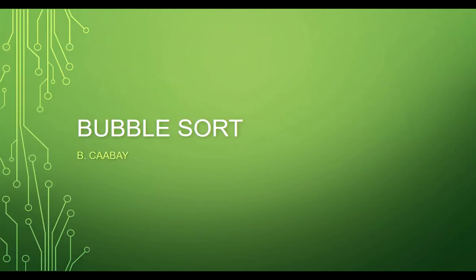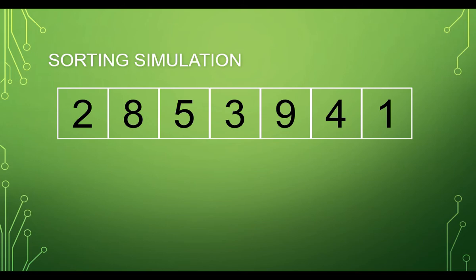To start working with our bubble sort, let's consider the following elements in a collection list. Let's apply the bubble sort algorithm to arrange these elements from the lowest number to the highest. Bubble sort works by comparing the first two elements — in this case, 2 and 8. If the left side is smaller than the right side, it will not do any swapping of elements.